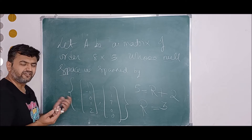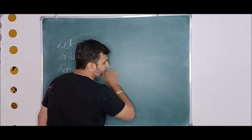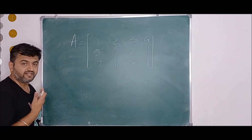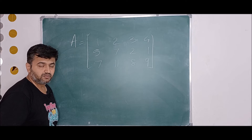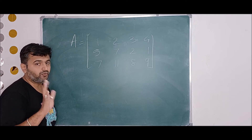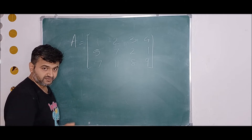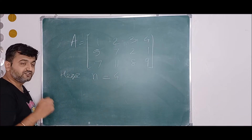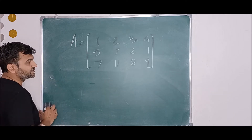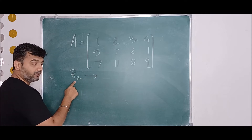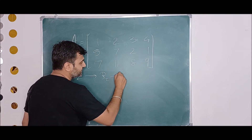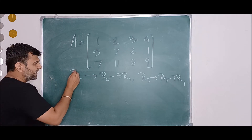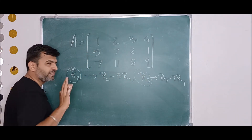For theory-type questions you may be asked to verify the rank nullity theorem for a given matrix. This means you need to find the rank, find the nullity, add them, and check that the sum equals the number of columns — which here is 4. To find the rank, apply row operations. We perform R2 minus 5R1 and R3 minus 7R1. It is always good practice to write down which row operation you are performing.